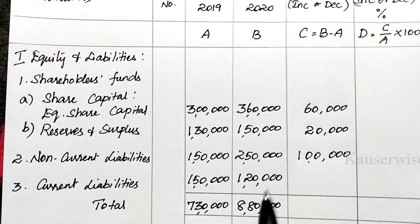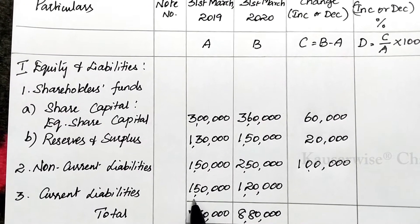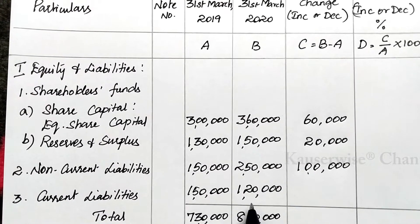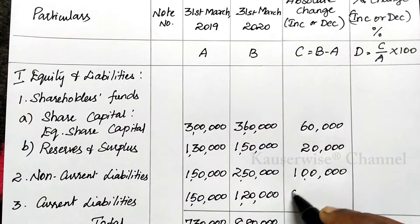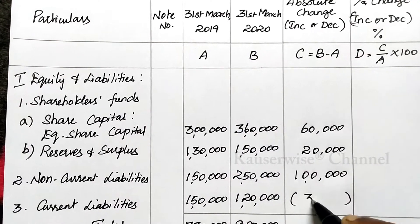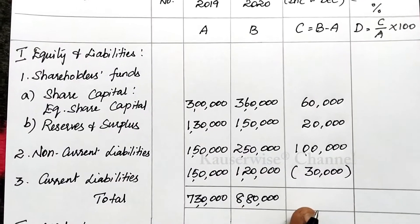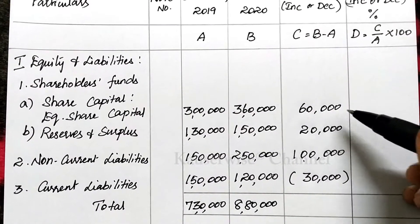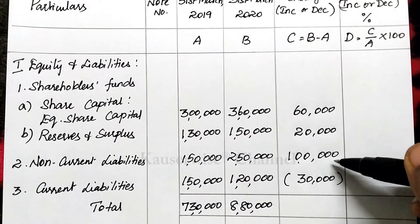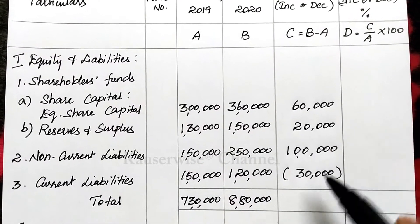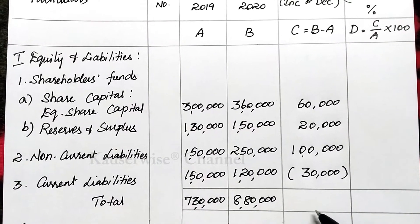For current liabilities: current year 1,20,000, previous year 1,50,000 — the difference is 30,000 decreased, so enter (30,000) within brackets. Now find the total absolute change for liabilities: 60,000 plus 20,000 is 80,000, plus 1,00,000 is 1,80,000, minus 30,000 gives 1,50,000. Enter 1,50,000 as the total absolute change for liabilities.